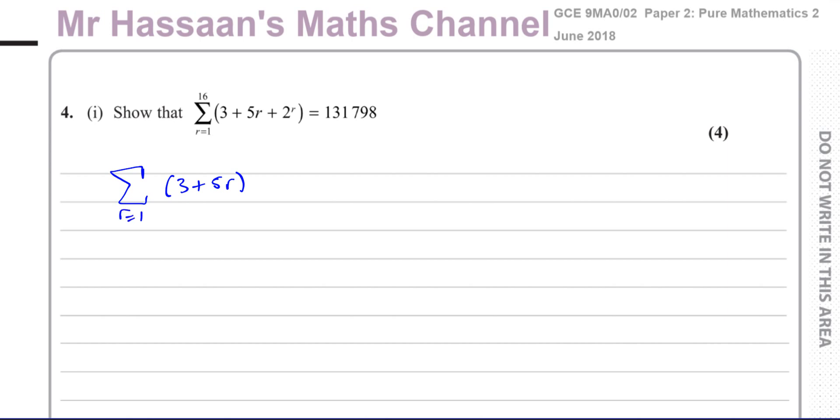The first type is an arithmetic series, 3 plus 5R, plus the second type is a geometric series, 2 to the power of R. So if I work out this separately and this separately, I should get my answer that I require. I'm going to take the first part and figure out the first few terms, and then work out what the sum of those terms are using the formula that we know.